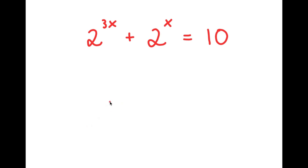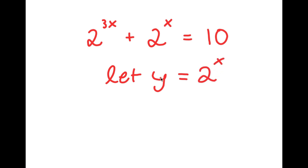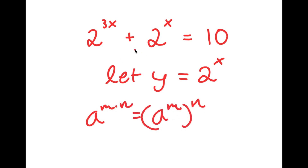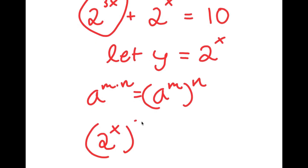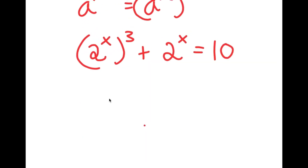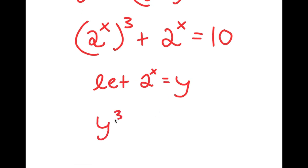So in this problem, I have 2 to the power of 3x plus 2 to the power of x is equal to 10. I'm going to start by letting y equal 2 to the power of x. If I have something in the form a to the power of m times n, this equals a to the power of m to the power of n. So 2 to the power of 3x equals 2 to the power of x, all to the power of 3. Letting 2 to the power of x equal y, I get y to the power of 3 plus y is equal to 10.